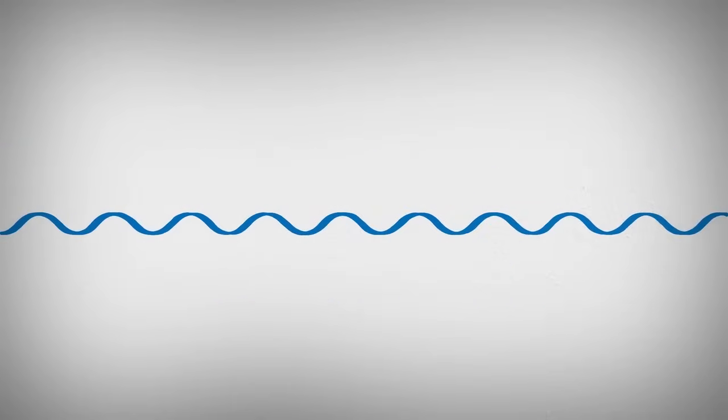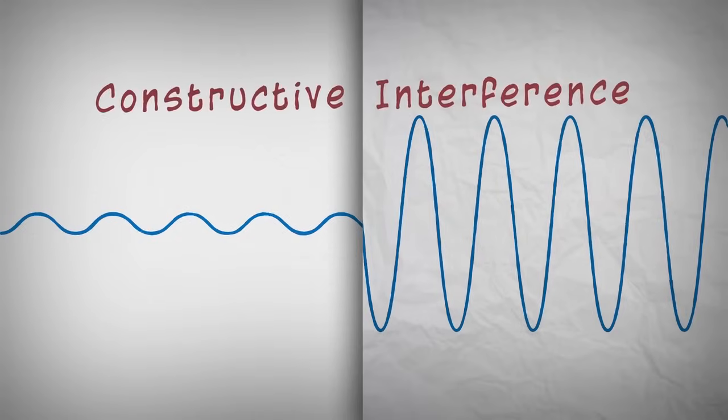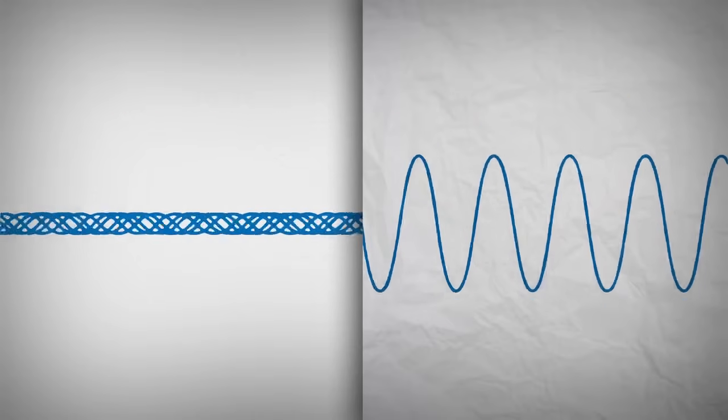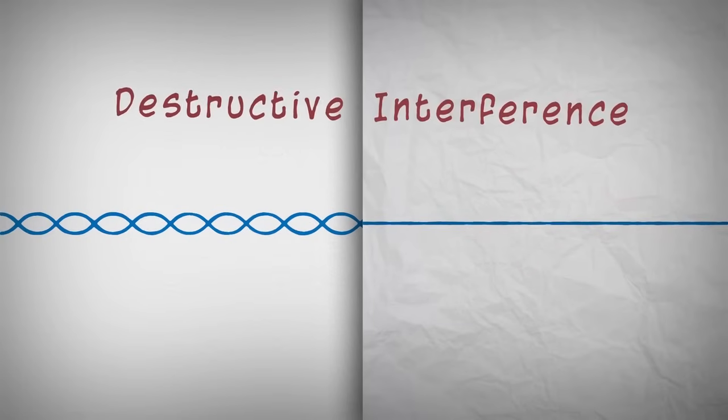Interference occurs when X-rays interact with each other. If the waves are in alignment, the signal is amplified. This is called constructive interference. If the waves are out of alignment, the signal is destroyed. This is called destructive interference.